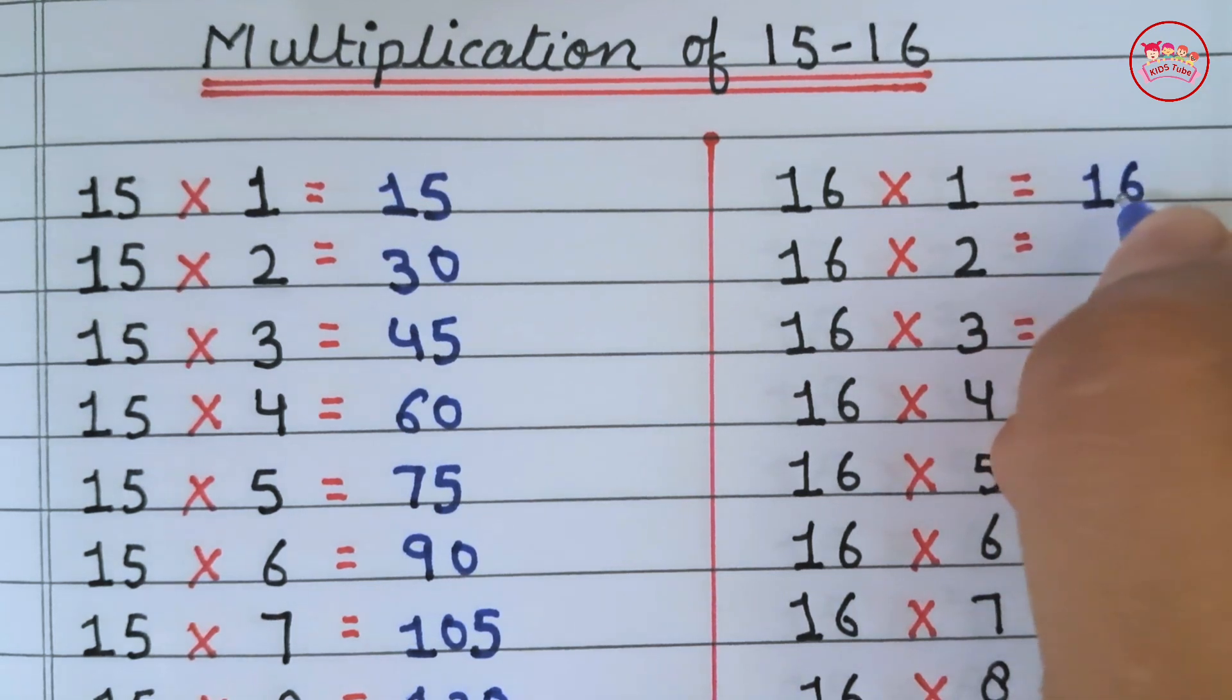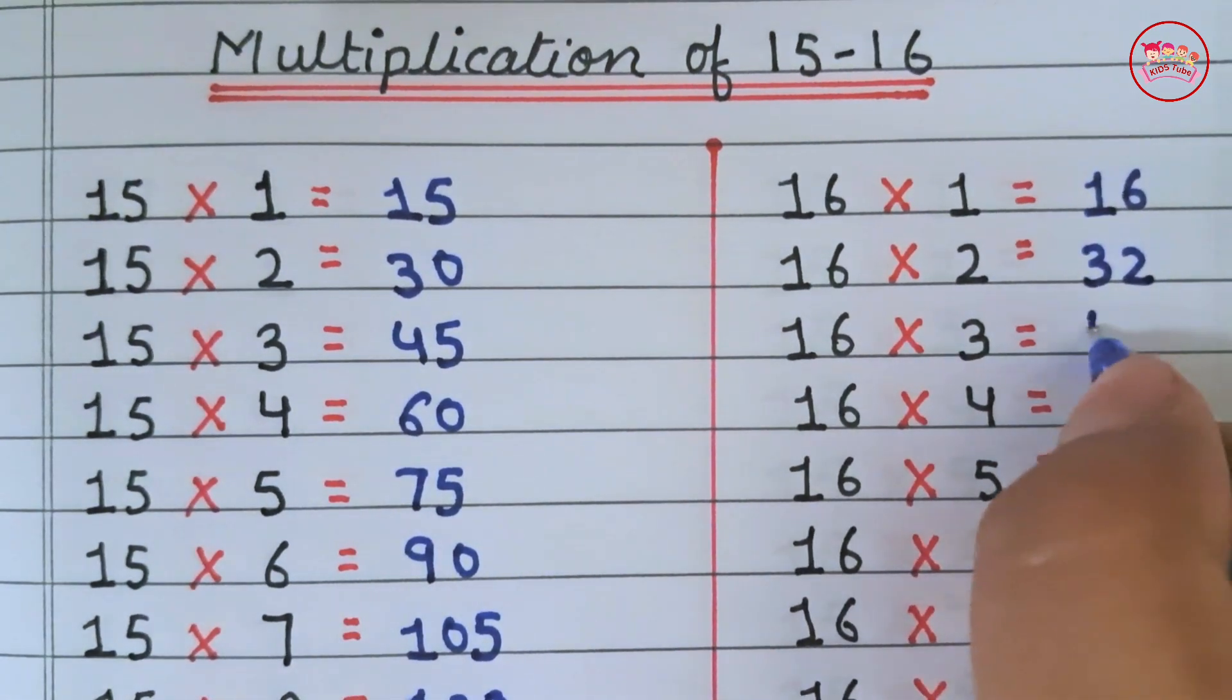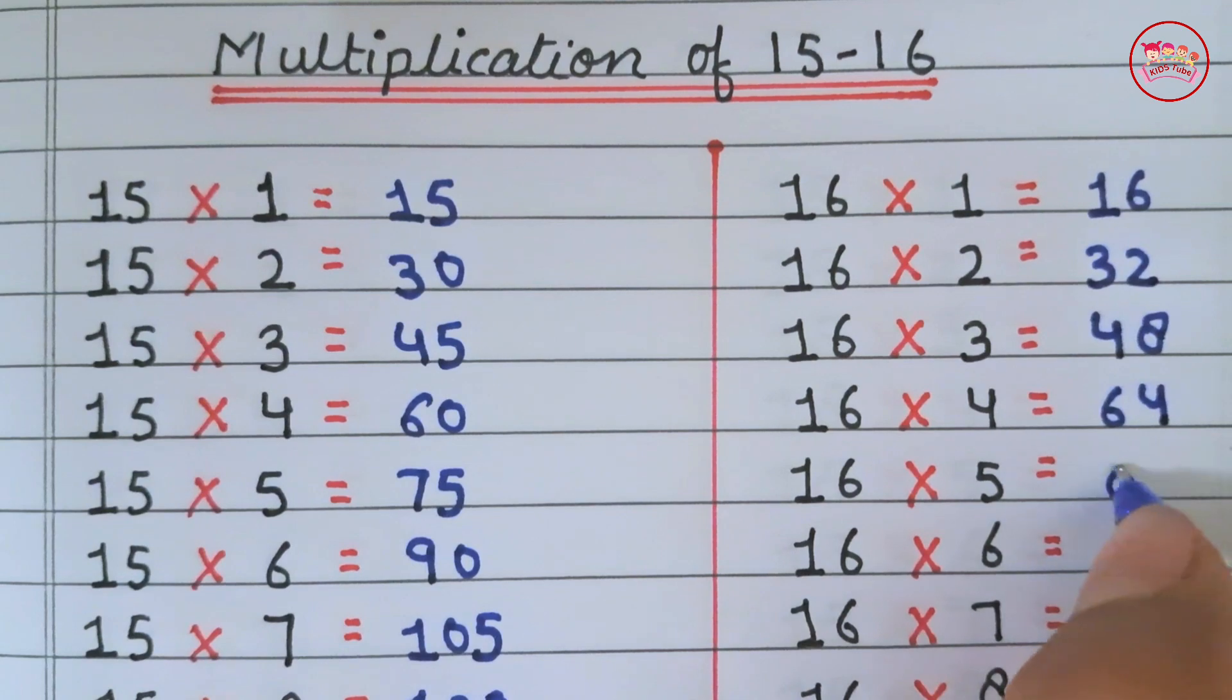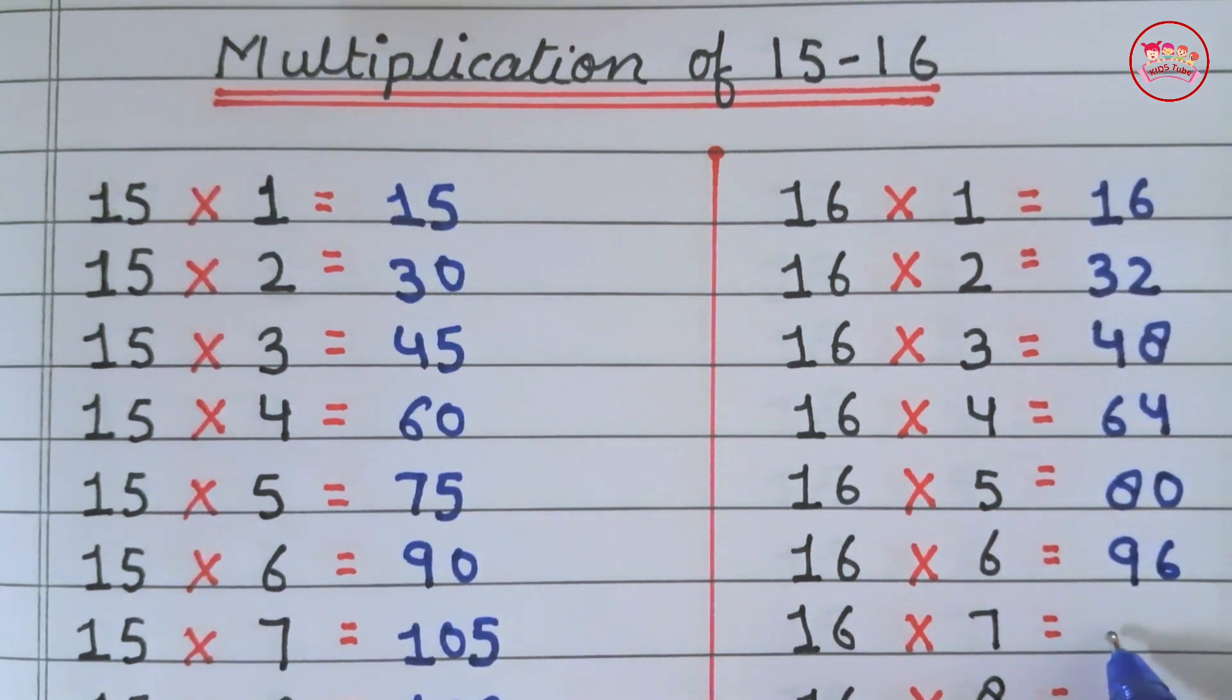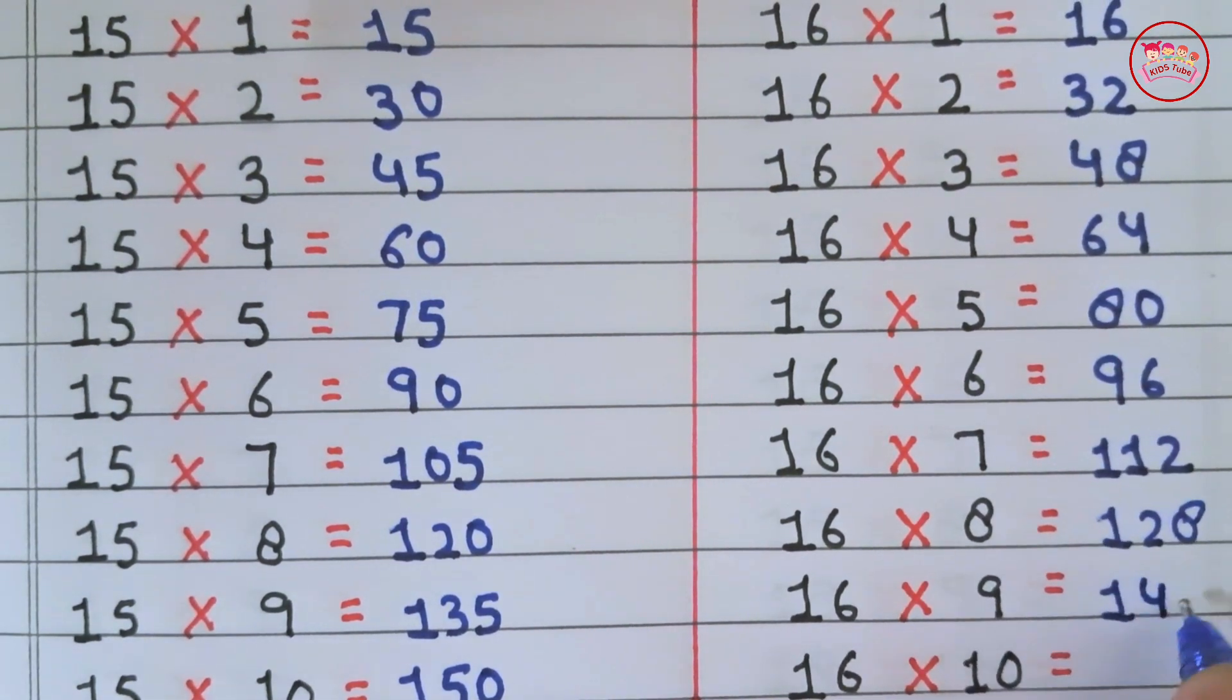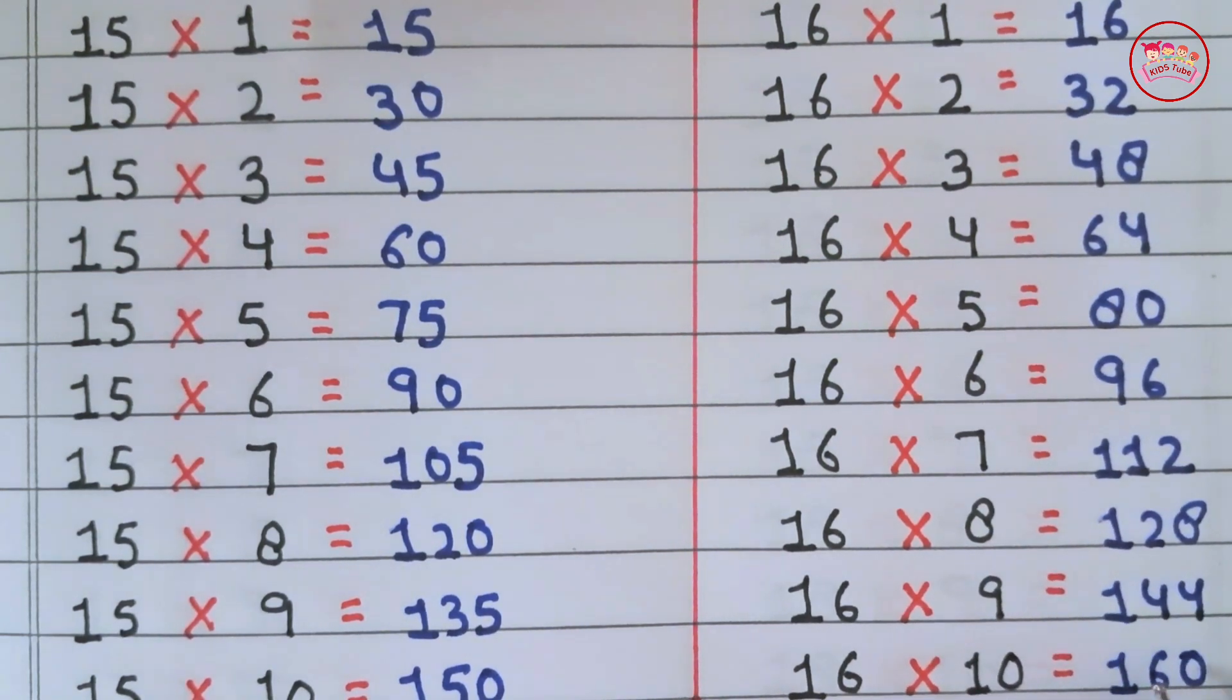16×1 is 16, 16×2 is 32, 16×3 is 48, 16×4 is 64, 16×5 is 80, 16×6 is 96, 16×7 is 112, 16×8 is 128, 16×9 is 144, 16×10 is 160.